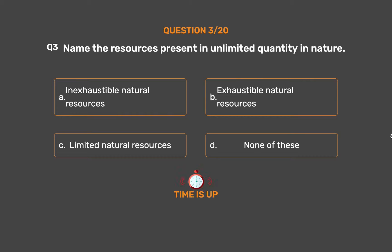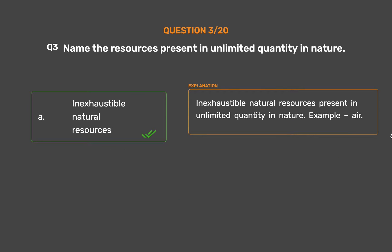The correct answer is Option A: Inexhaustible natural resources. Inexhaustible natural resources are present in unlimited quantity in nature. Example: Air.